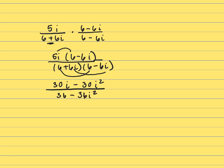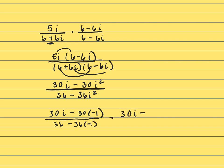We know that i squared equals negative 1. So that's 30i minus 30 times negative 1, all over 36 minus 36 times negative 1. This ends up being 30i plus 30, over 36 plus 36.